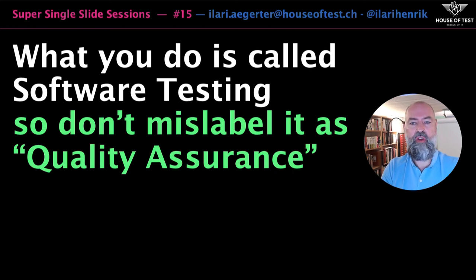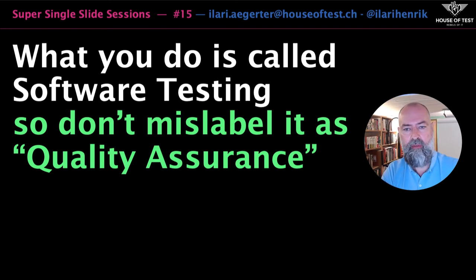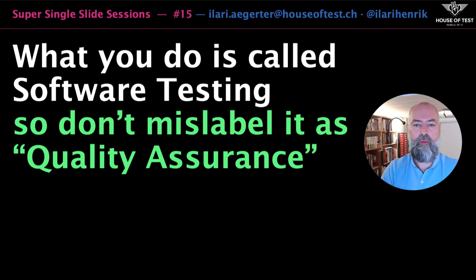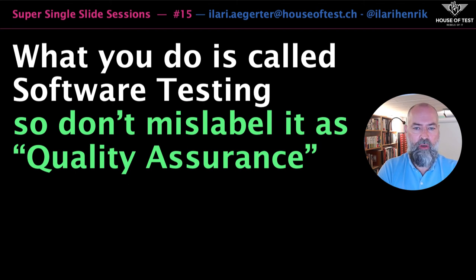Quality assurance is a term that comes from manufacturing and the separation of labor rooted in the ideas of scientific management by Frederick Winslow Taylor. It is applicable in closed, non-complex systems — it addresses a repeatable process. There are the same things produced over and over again, and here we can implement measures to assure the quality of what is being produced.